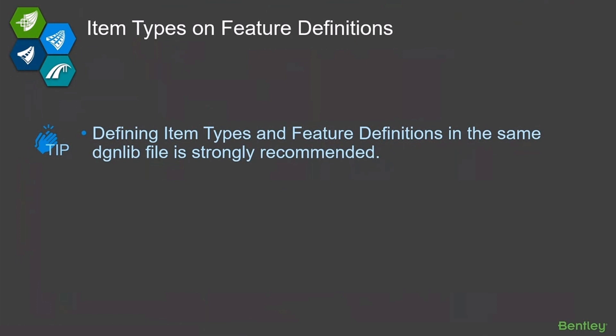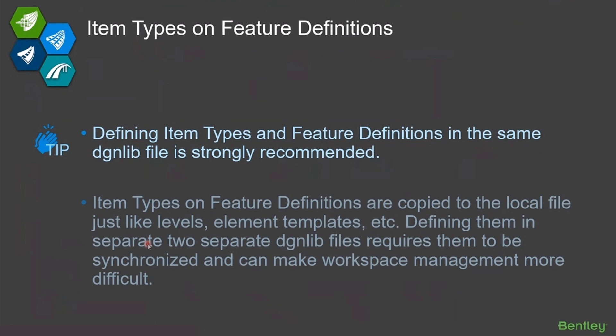What I would encourage you is to put them in the same DGN library. The reason for that is that when you attach an item type to a feature definition, it gets copied into the file where that feature definition exists. So if your item types are defined in file A and your feature definitions in file B, it's going to copy that item type into file B anyway.